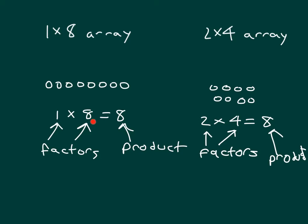Those numbers that we multiply together to get 8 are called our factors. The factors of 8 are 1, 8, 2, and 4. Typically, we list our factors in order: 1, 2, 4, 8. Those are all factors of 8.